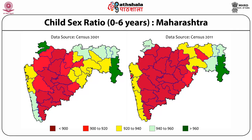This is the paradox: sex determination becomes popular not only in the most developed areas but also in underdeveloped areas. By 2011, there is considerable decline even in most parts of eastern Maharashtra which were much better off. Practically, light green and green have all disappeared — even the coastal regions which were better off have declined. Almost all districts of Maharashtra show change.